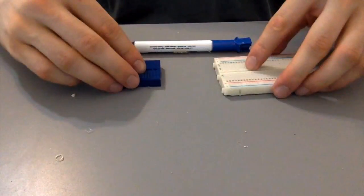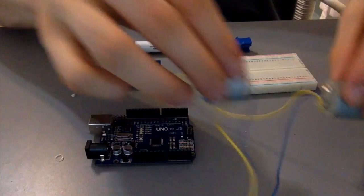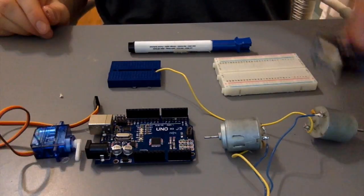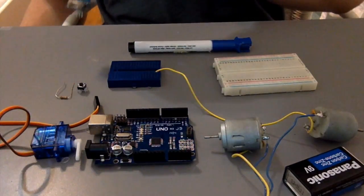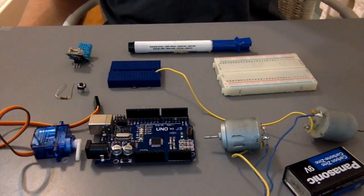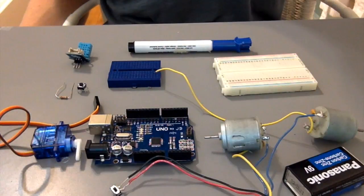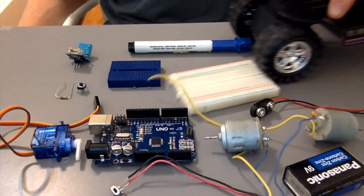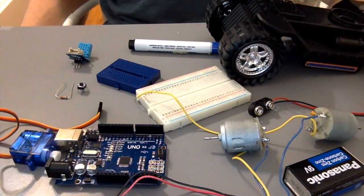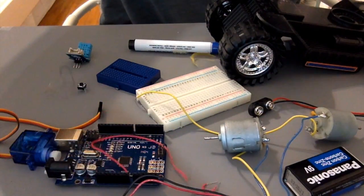You'll need a whiteboard marker, some breadboards, an Arduino, some motors, a servo, a 9 volt battery, a 1 kilo ohm resistor, a push button, a DHT temperature and humidity sensor, a switch, a 9 volt battery terminal, a toy truck, and a whole mess of loose wires.